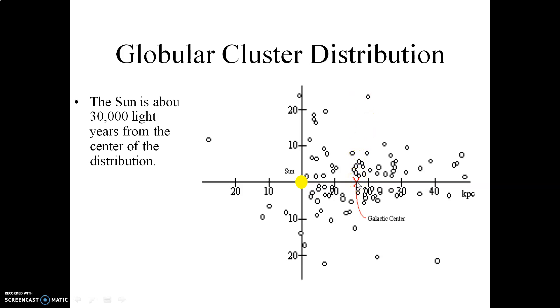The distance from the sun to the center of that distribution is about 30,000 light years. Shapley correctly interpreted his results as indicating that the center of the Milky Way lies in this direction.